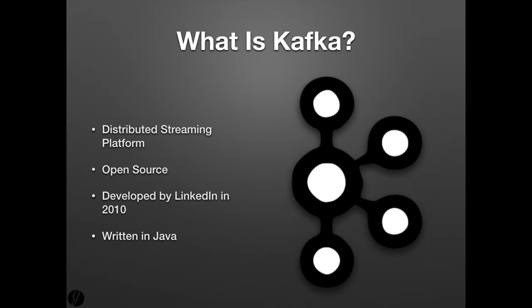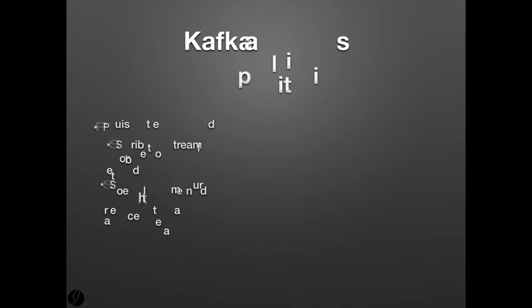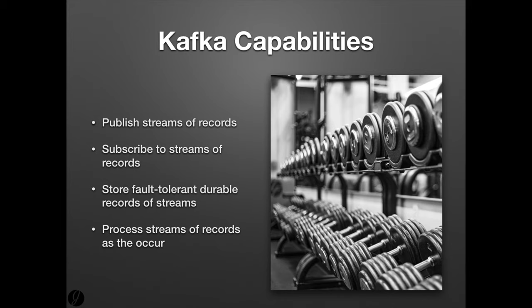Kafka is an open-source distributed streaming platform written in Java and developed as a messaging system for LinkedIn in 2010. Kafka is used to publish streams of records, subscribe to streams of records, store fault-tolerant durable records of streams, and process streams of records as they occur. Kafka moves information between computers or servers in a reliable way that ensures the platform is rarely offline and never loses data in the process. This data can also be saved to maintain a record of what has been transmitted.